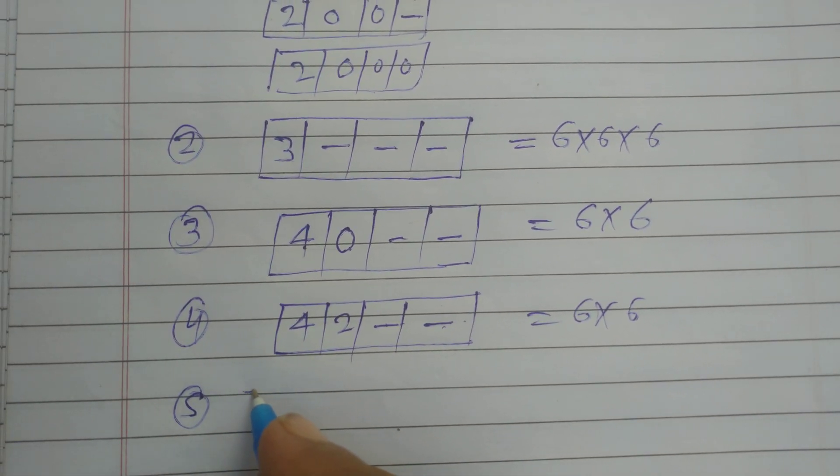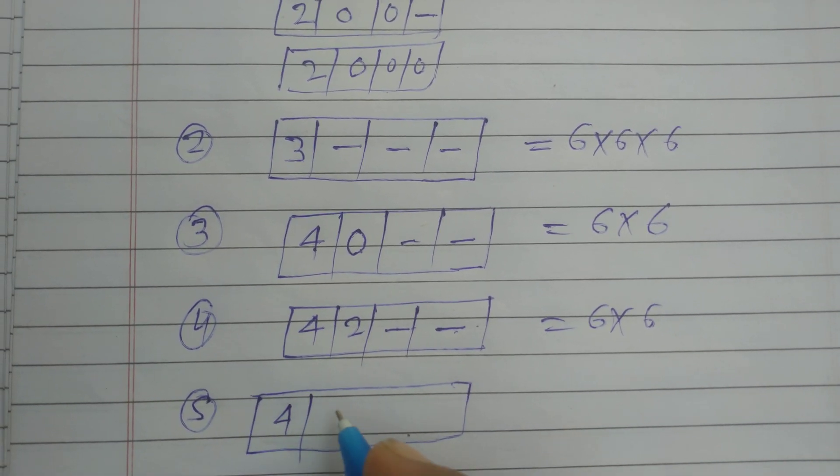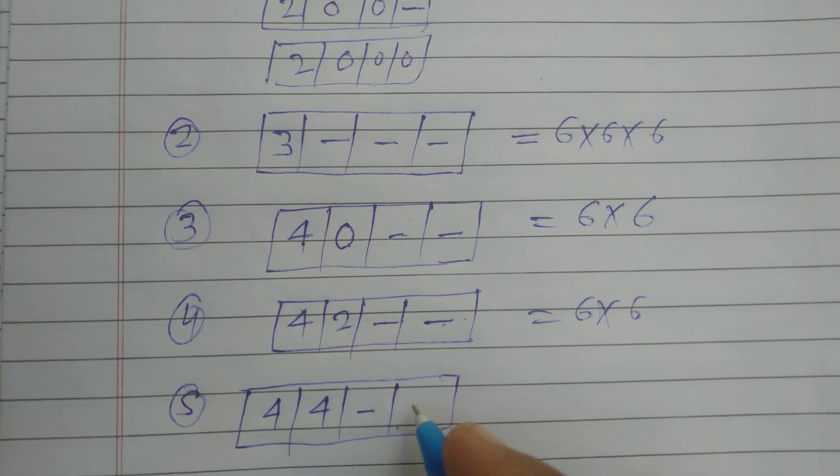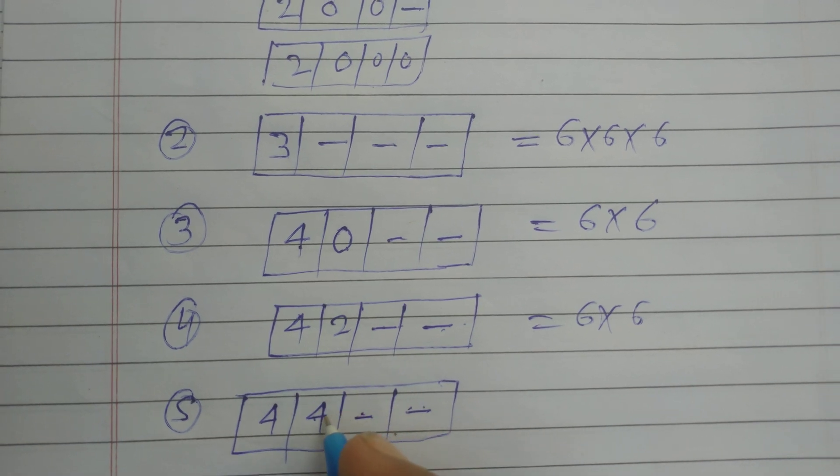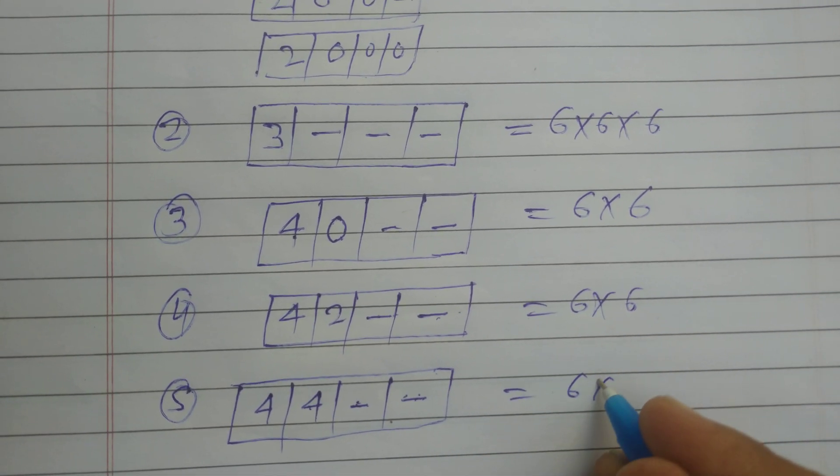In the 5th condition, when 4 at 1000 place and 4 at 100 place, then 10 and 1s place can be filled by 6 into 6 ways.